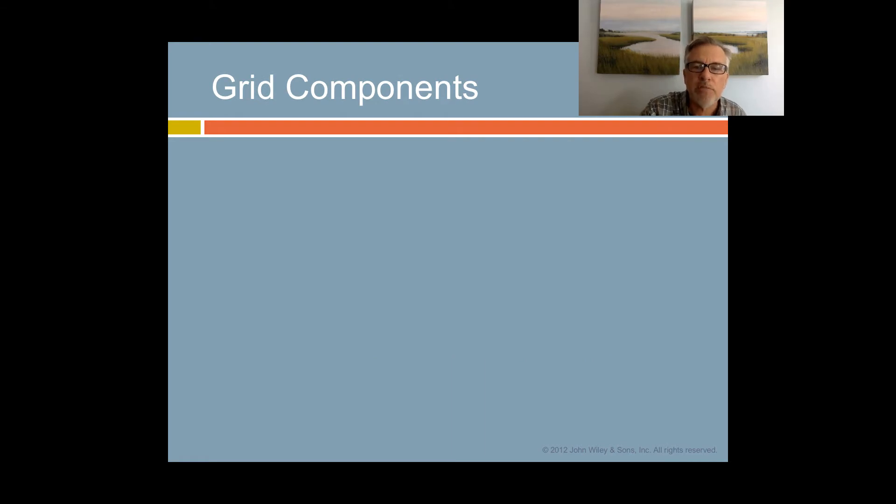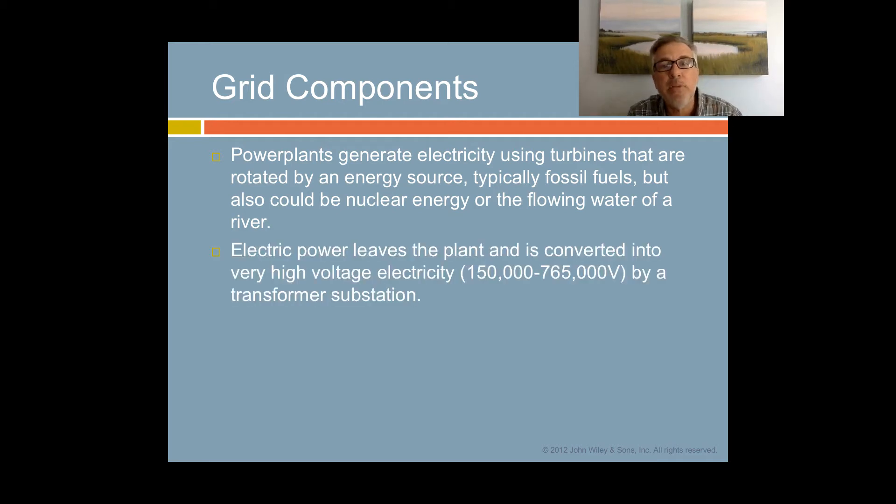What are the components of a grid? The power plants generate electricity using turbines, just as I showed you before. Those are rotated by an energy source, typically fossil fuels, but it could also be nuclear energy or the flowing water of a river in hydroelectric power. Electric power leaves the plant and is stepped up to a very high voltage through a series of technologies. It will be raised to 150,000 to 765,000 volts by what's called the transformer substation.